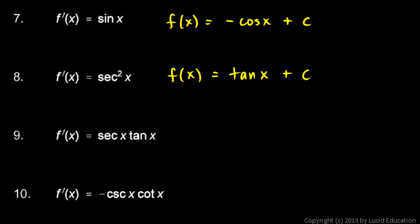Number nine: f prime of x is secant x tangent x. You probably recognize that too if you remember your derivatives of the trig functions. The secant function has secant x tangent x as its derivative, so f of x is secant x plus c.